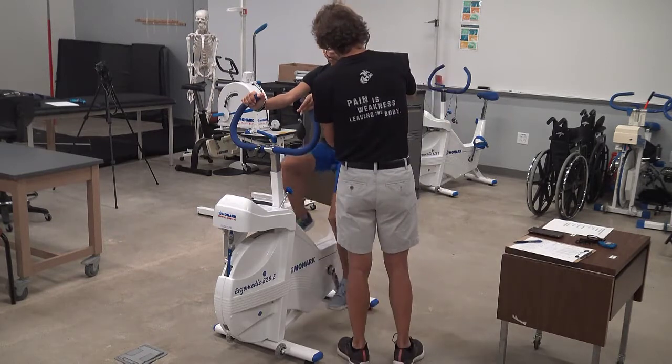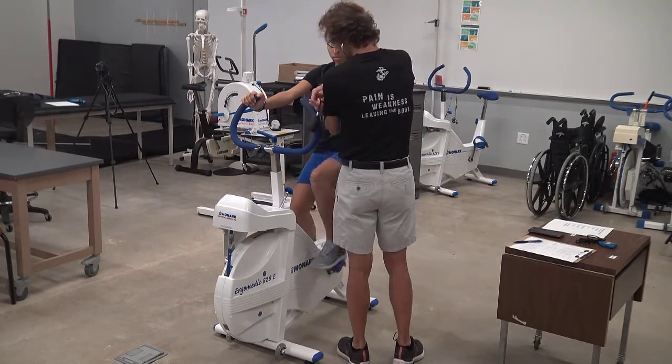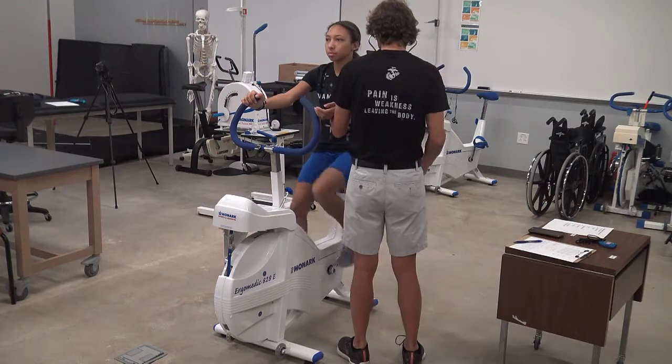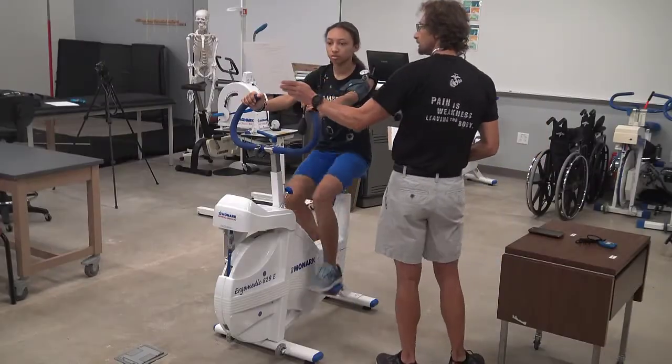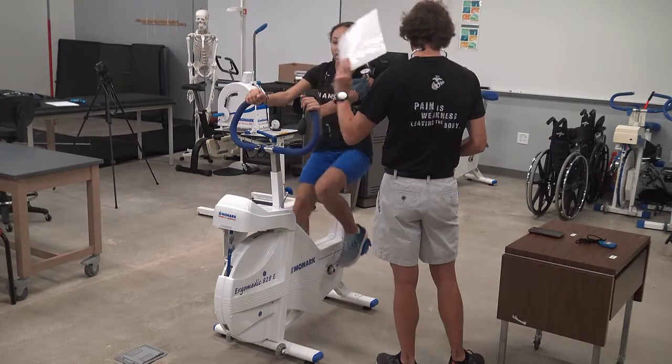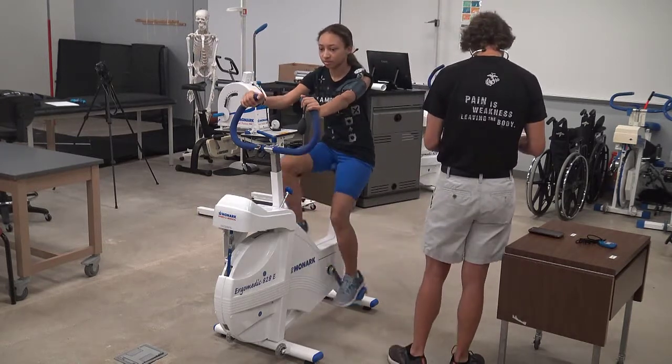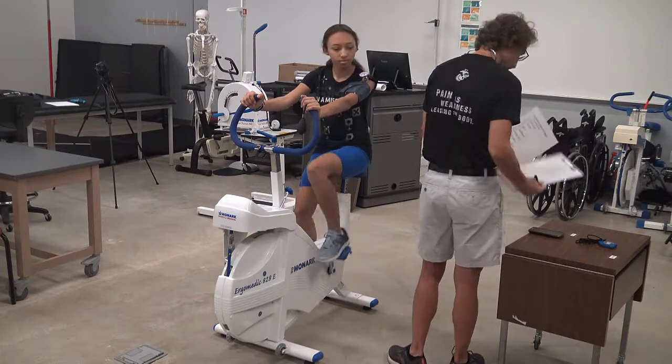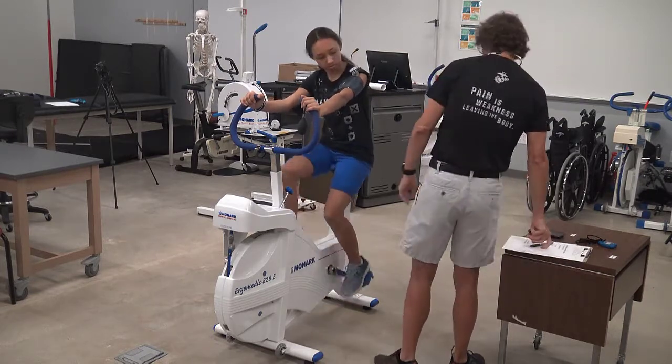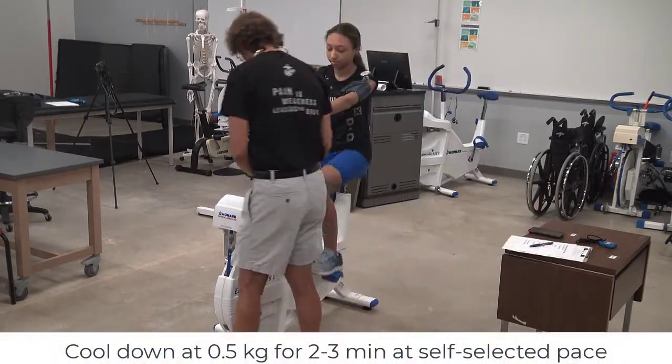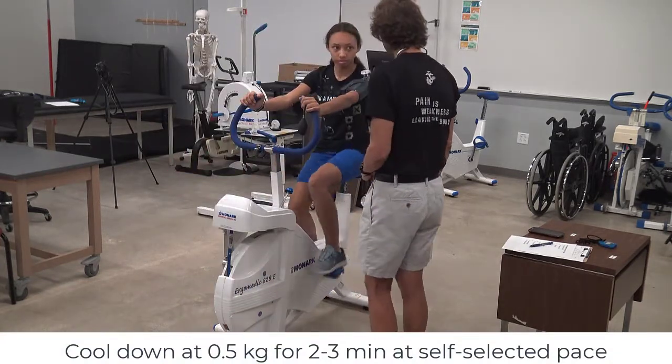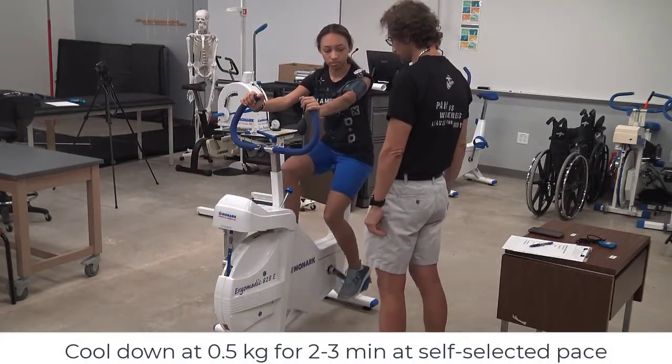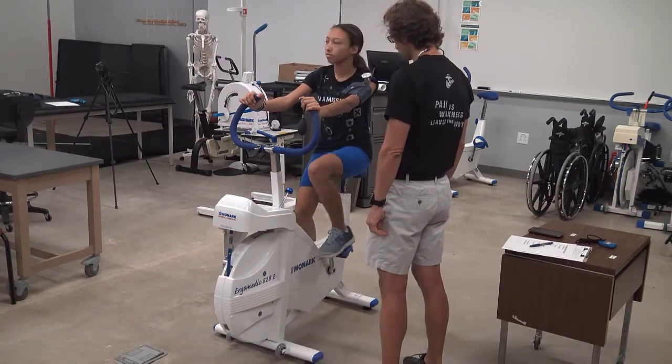We can now take our final blood pressure. And once finished with blood pressure, we can take our final rating of perceived exertion. Since we now have steady state heart rates from two consecutive stages within 110 and 150 beats per minute, we're finished with the test. Bring the resistance back down to a half kilogram and allow your client to continue pedaling at a self-selected rate for two or three minutes to cool down.